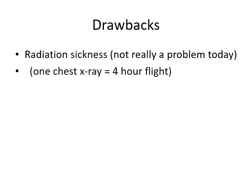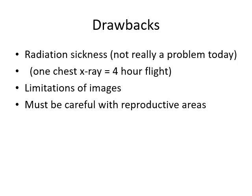Radiation sickness was a problem when x-rays were first being done. One of the greatest party tricks was bringing an x-ray machine to your friend's house and x-raying yourself over and over again. There are stories of x-ray technicians and doctors x-raying their hands repeatedly — eventually their hands were cooked with radiation poisoning. There is also a limit with the images: sometimes there are blurry spots you just can't correct for, and you have to be careful of reproductive areas to avoid mutations in sperm or egg cells.